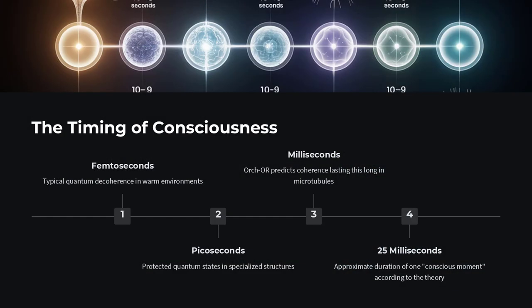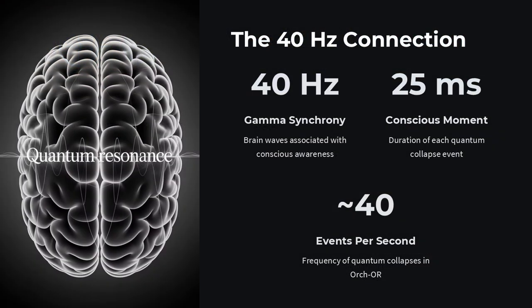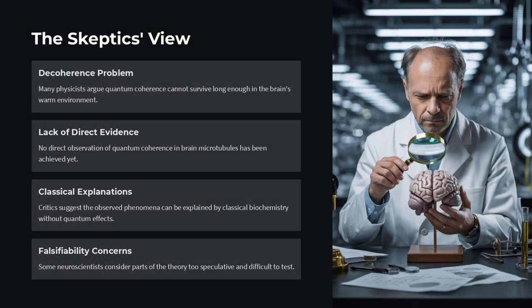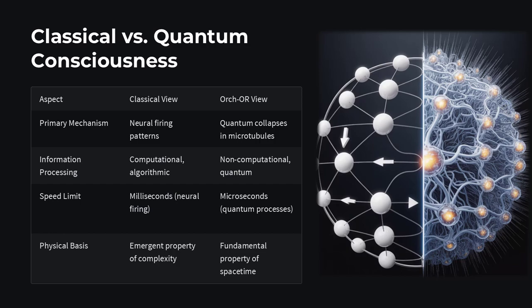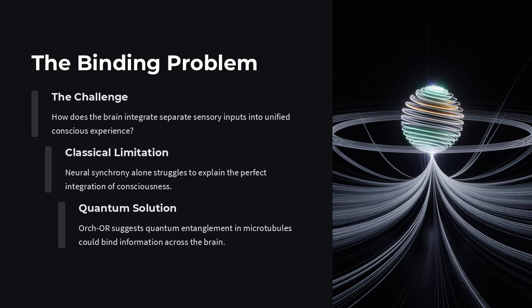How could quantum effects survive in the wet, warm chaos of a brain? Orch-OR suggests that tubulin proteins inside microtubules can occupy superposed states, tiny quantum vibrations that remain coherent long enough to influence neuronal firing.